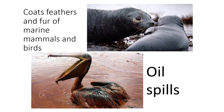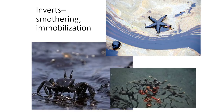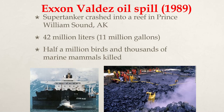Oil spills coat feathers and the fur of marine mammals and birds — an obvious and serious concern. For fish, oil can cause death from ingestion or from blocking their gills. With invertebrates, it smothers them and can immobilize them, causing them to be unable to move and then die.